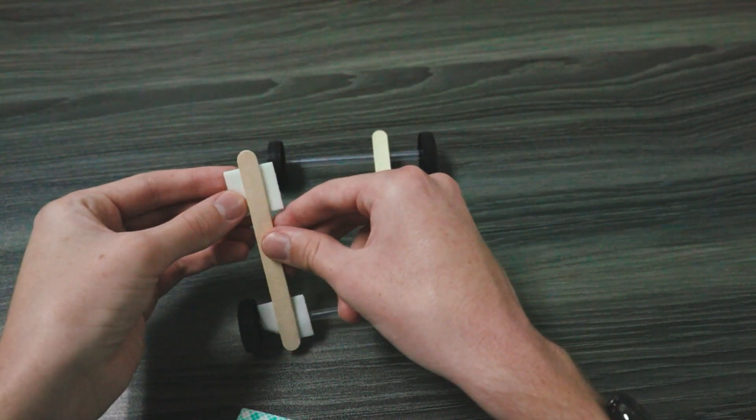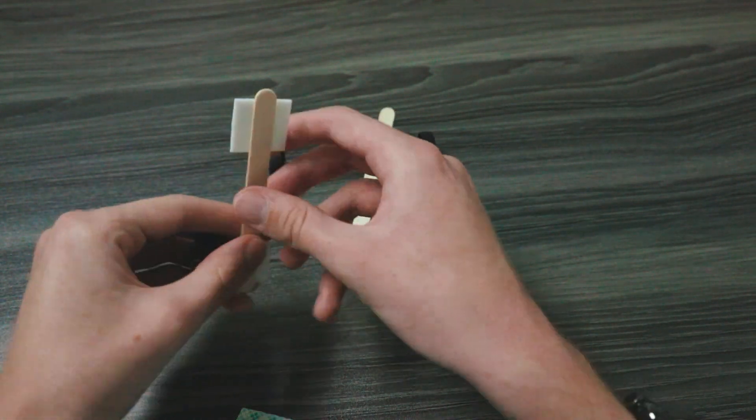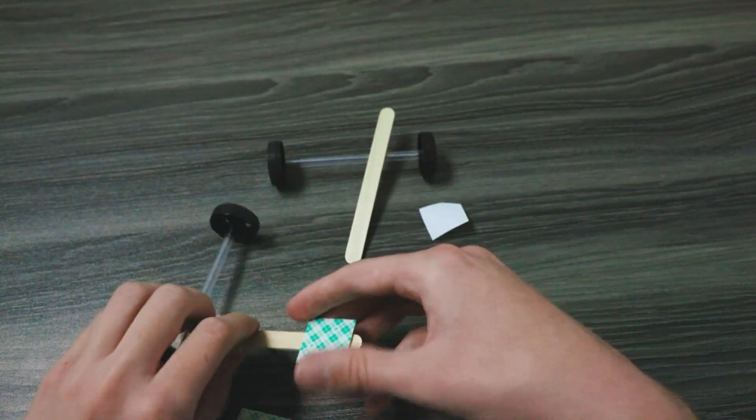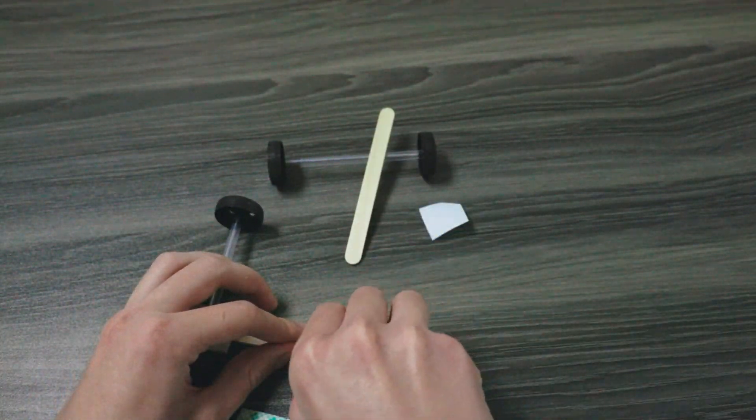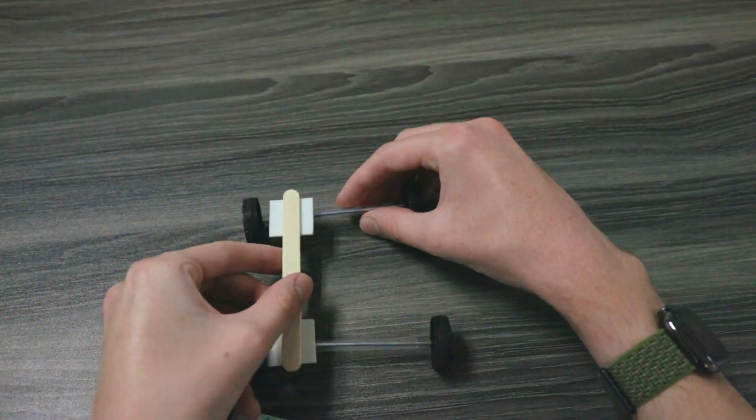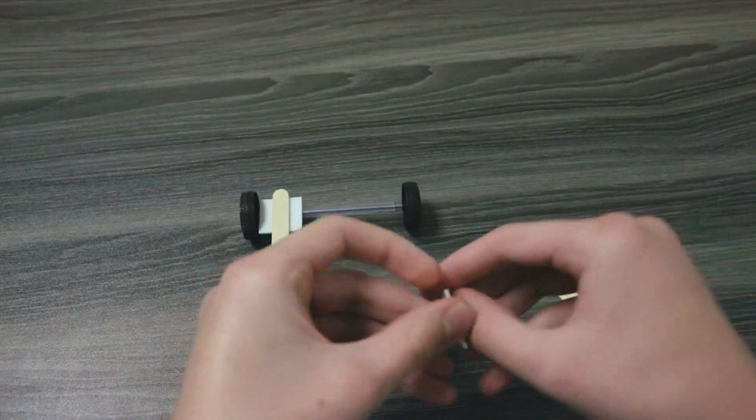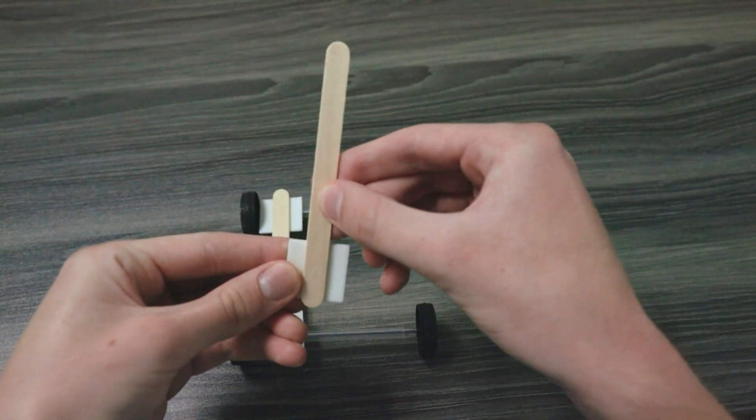I'll attach this same popsicle stick to the other axle, then I'll repeat this process with the other popsicle stick.